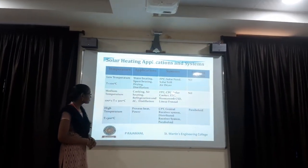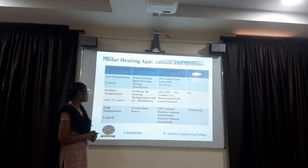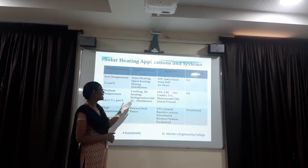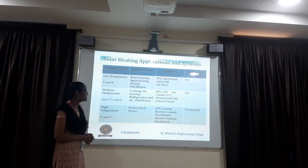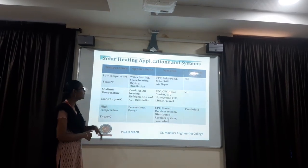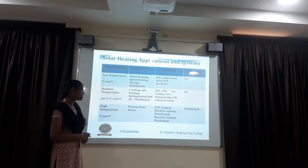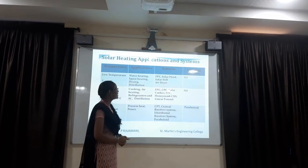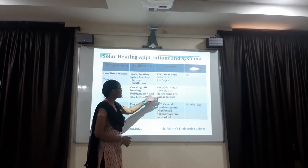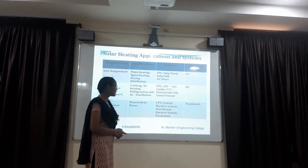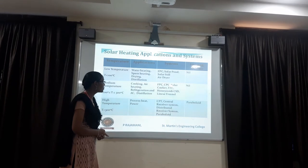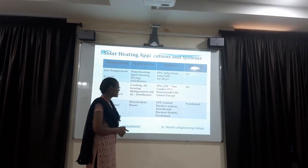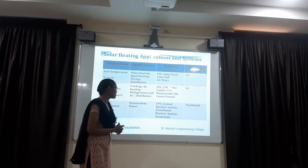Moving on to medium temperature - in medium temperature we are using cooking, air heating, refrigeration, and air conditioning. These are the medium temperature applications. The systems used include flat plate collector, CPC, solar cooker, ETC, honeycomb collector, CSP, and linear Fresnel.